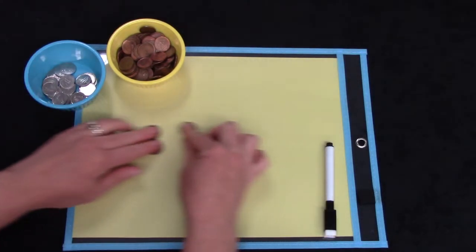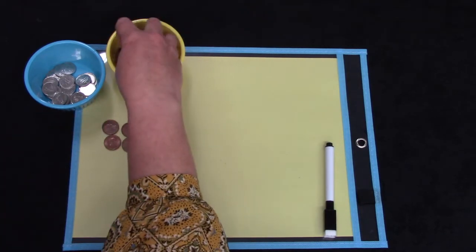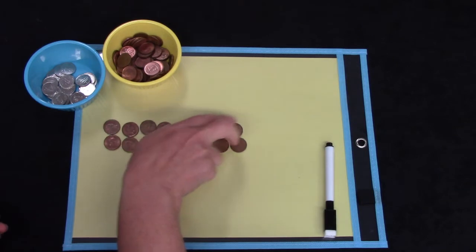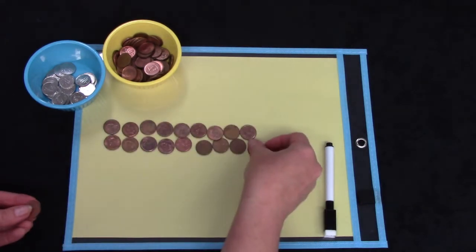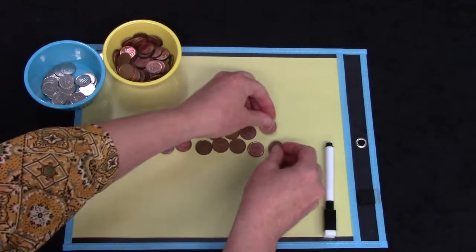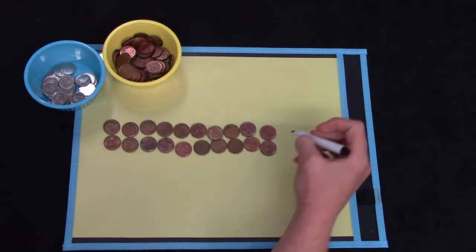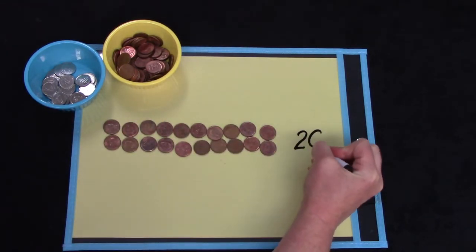Well, let's try this with 20 pennies. 2, 4, 6, 8, 10, 12, 14, 16, 18, and 20. I have 20 pennies and that is 20 cents.